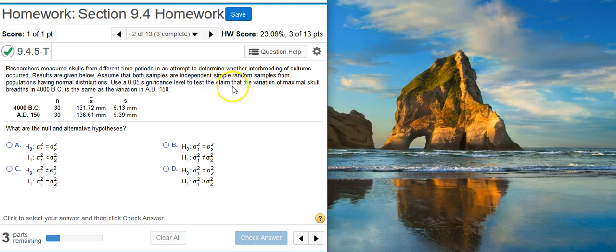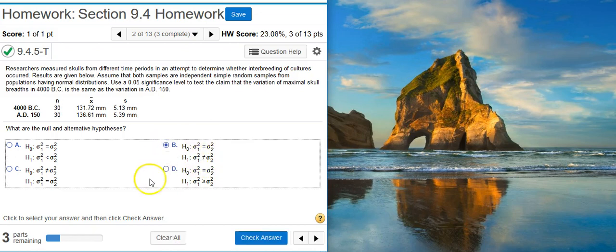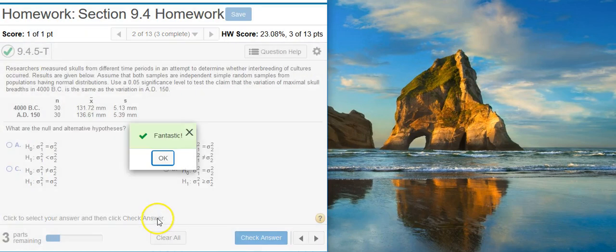Well, here we're testing the claim that the variation of maximal skull breaths is the same for both of those years. So we're looking for something that says they're equal. Well, equality, by definition, belongs to the null hypothesis. So we have to take the complement of the claim as our alternative and say that they're not equal to. And if I look at the answer options that are left, answer option B is going to be the one we want because here it says not equal to. Fantastic!